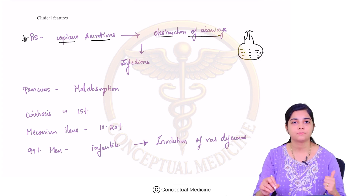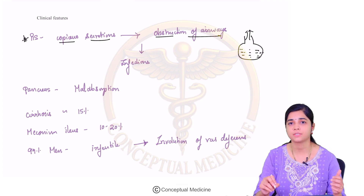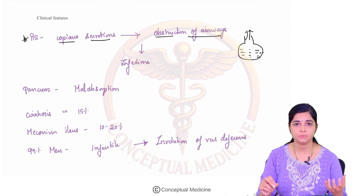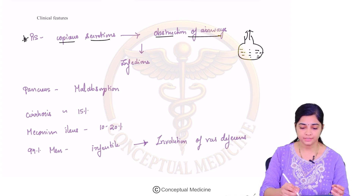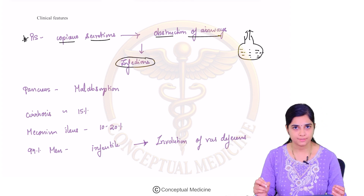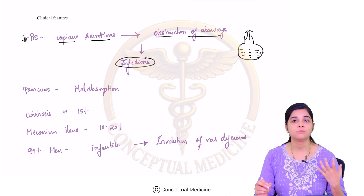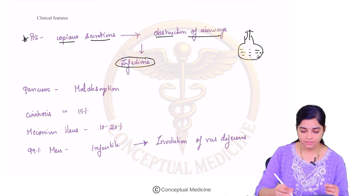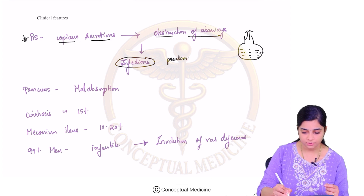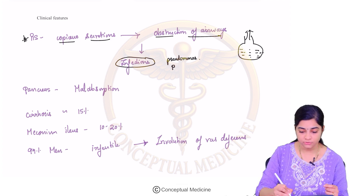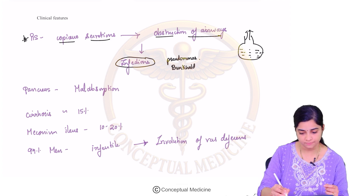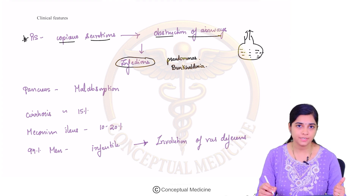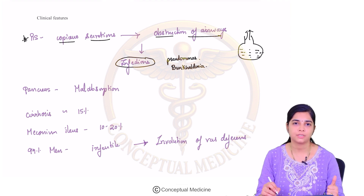So cystic fibrosis is essentially an obstructive lung disease. The accumulation of thick tenacious secretions leads to obstructive airway disease and also results in recurrent lower respiratory tract infections. Cystic fibrosis patients are more prone to infections by bacteria — predominantly Pseudomonas, and rarer forms like Burkholderia species.